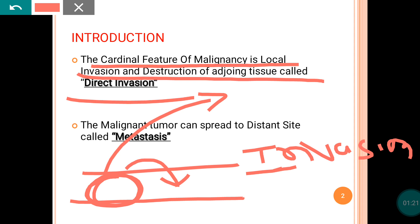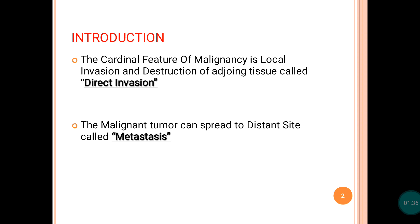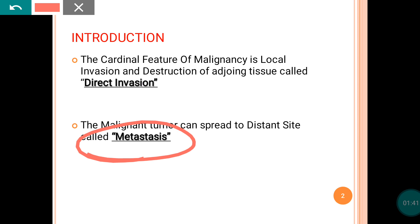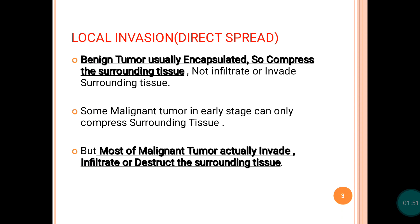If this tumor spreads distally to particular organs like the liver, kidney, spleen, or adrenal gland, then it is known as metastasis. Or if it spreads to the lymph nodes, that process is also known as metastasis — meaning the distant spread of the tumor. That is called metastasis, and that is the peculiarity of the malignant tumor.